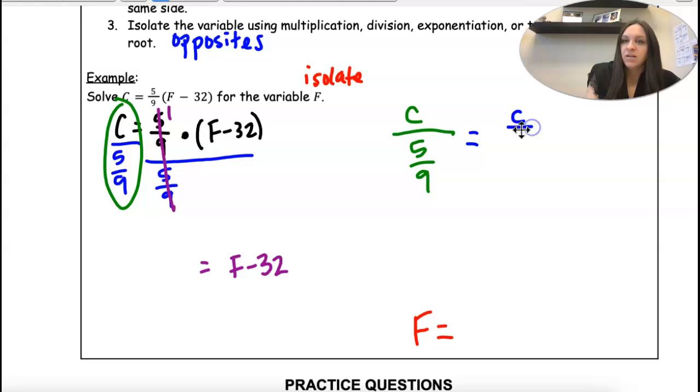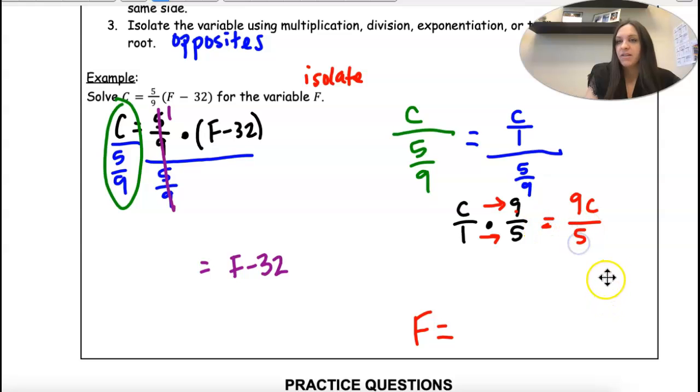This is really C over 1 divided by 5 over 9. So when we divide fractions, we multiply by the reciprocal. So C over 1 times, and then we flip this fraction. Remember copy dot flip. And then we can multiply straight across. So C times 9, proper form, we would write 9C. 1 times 5 is 5. So this simplifies to 9C over 5.